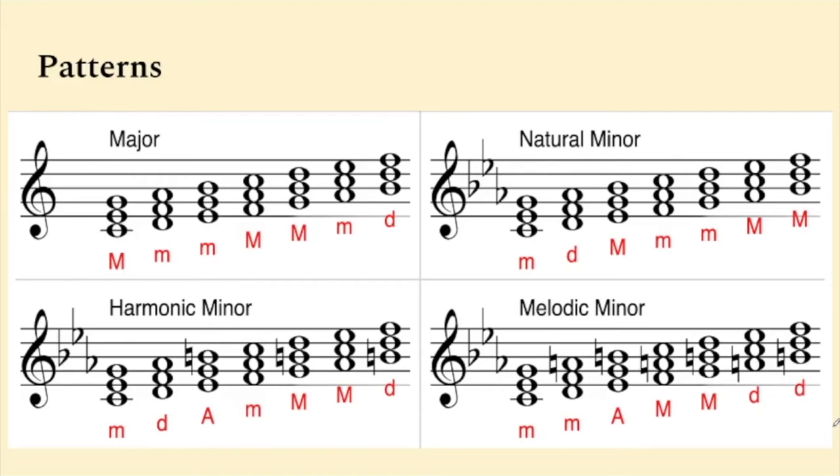Minor diatonic chords are a bit more complicated, and we will not go over them in this video, but these are the corresponding patterns of the minor chord qualities. Notice how the natural minor, harmonic minor, and melodic minor diatonic chords are all different, and this is because all those scales are different.